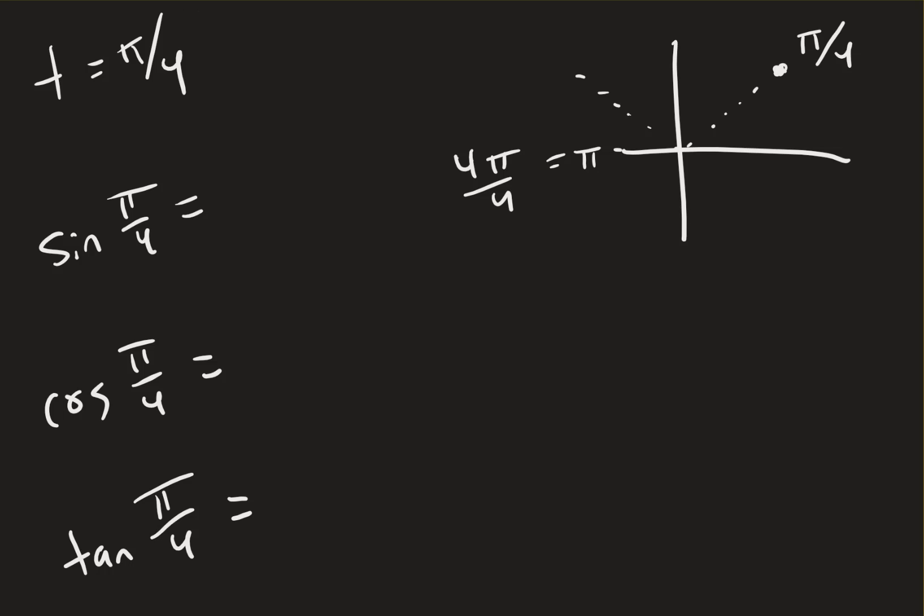And then the way I like to think of this is it looks like this is exactly in the middle of quadrant 1, so the x value is equal to the y value, and when the x and y are equal, it's square root of 2 over 2, and another square root of 2 over 2.